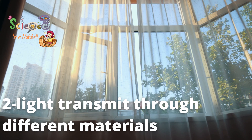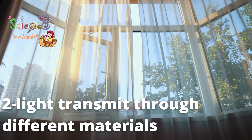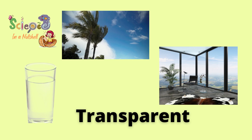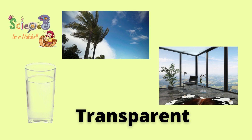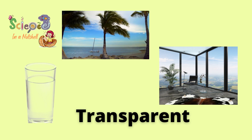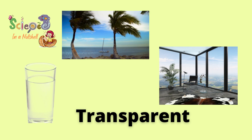The second property of light is that light travels or transmits through different materials: transparent materials, semi-transparent materials, or opaque materials. Transparent materials allow most of the light to pass through, so the object can be seen clearly through them — like a glass cup, clear water, air, and a clear glass window.